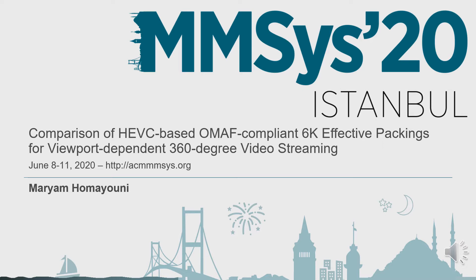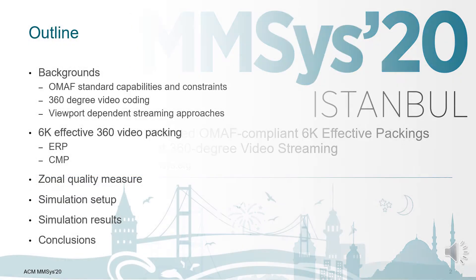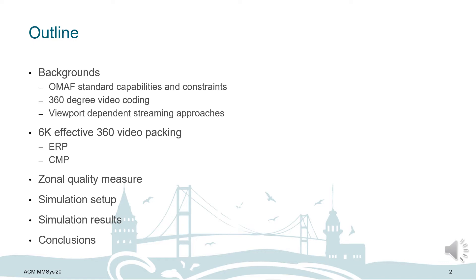As the title suggests, in this presentation I'm going to compare the performance of two 6K effective packings for 360-degree video streaming, which both are recommended by the OMAF standard. The outline covers: background on OMAF standard capabilities and constraints, 360-degree video coding and streaming, viewport dependent streaming, the two test cases (6K effective packings for ERP and CMP), zonal quality assessment methodology, simulation setup and results, and conclusions.